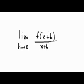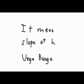But what if we wanted to get the slope of any point on the graph? To do this, we take the limit as x approaches zero of a function evaluated at x plus h all divided by x plus h. That's a crazy way of saying we find the slope at that point.